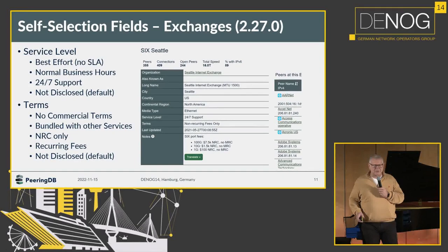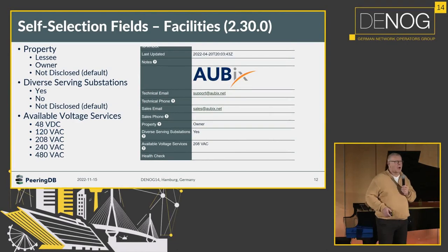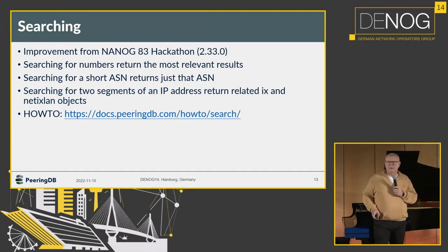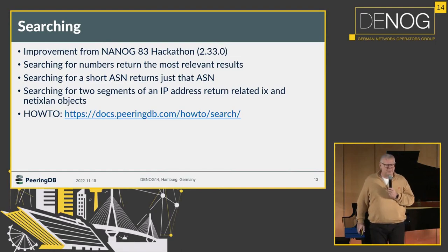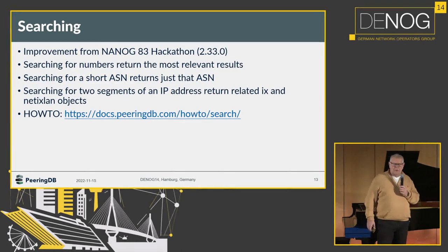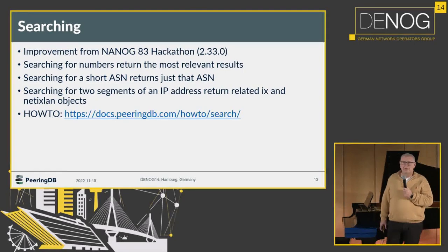We added self-selection fields both for exchanges and for facilities, where they can describe in more detail what their offerings are. Searching is an ongoing story — the searching capabilities of PeeringDB still have room for improvement, but we have already done a lot, and it is still not an easy task to solve.